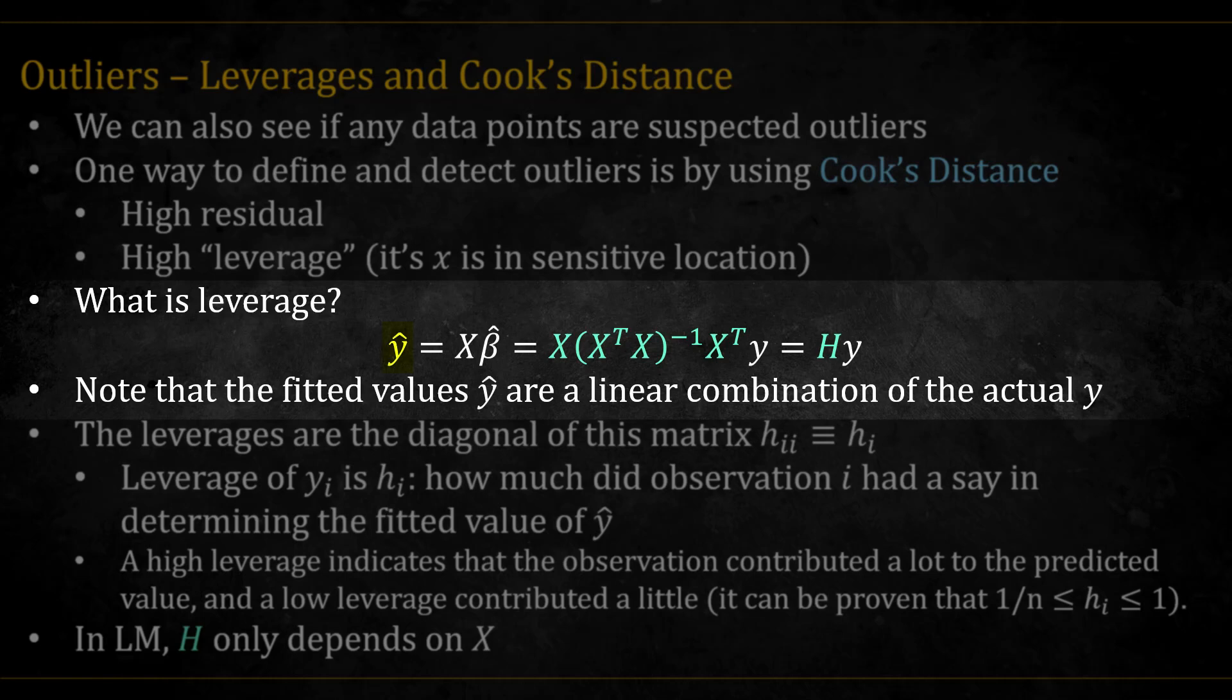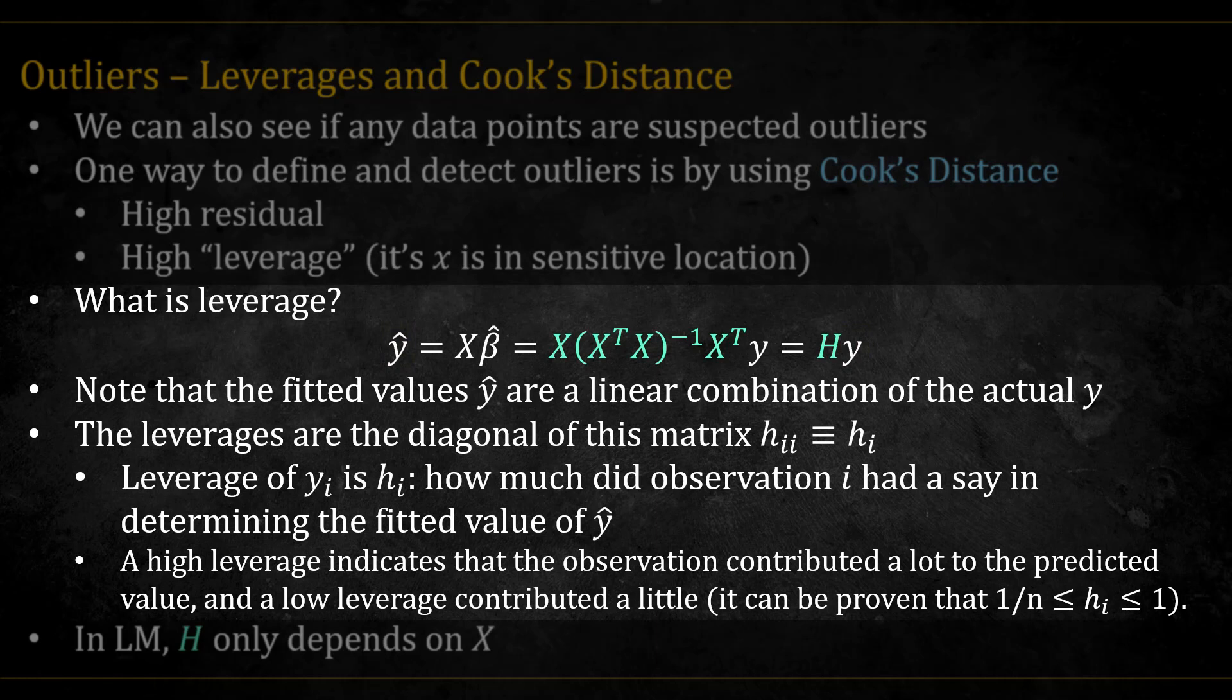Well, remember the hat matrix from before? Notice that we get that the predicted Y's are a linear combination of the actual Y values. The leverages are the diagonal of the H matrix. That is, the leverage HI is measuring how much did YI have a say in determining the value of Y hat I. A high leverage indicates that it contributed a lot, and a low means it contributed little. And it can be proved that the leverages are between 1 over N and 1.